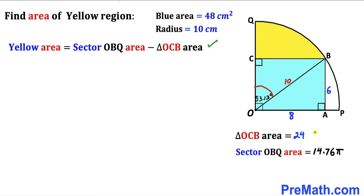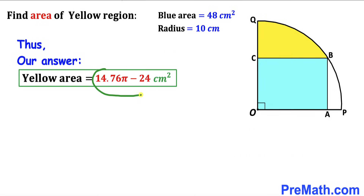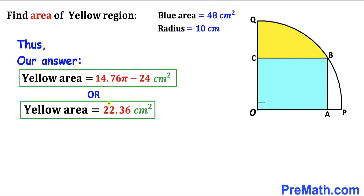Putting it all together: yellow area = area of sector OBQ − area of triangle OCB = 14.76π − 24 ≈ 22.36 square centimeters. Thanks for watching, and please don't forget to subscribe to my channel for more exciting videos!